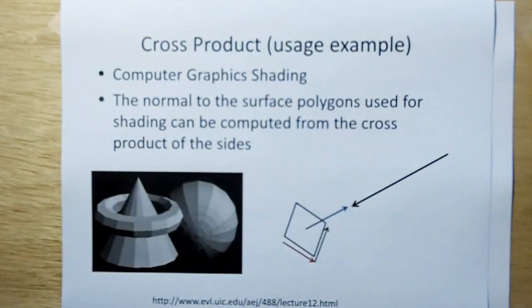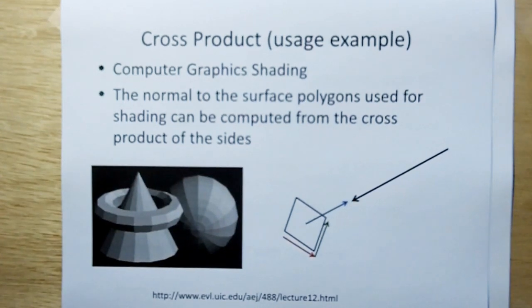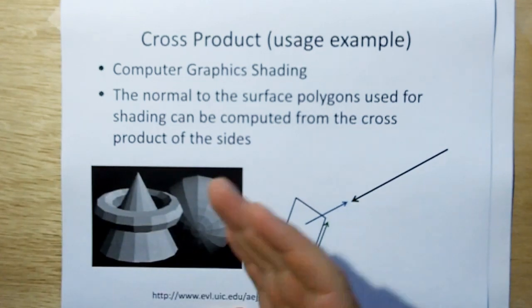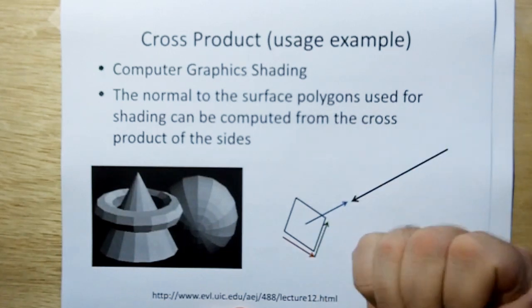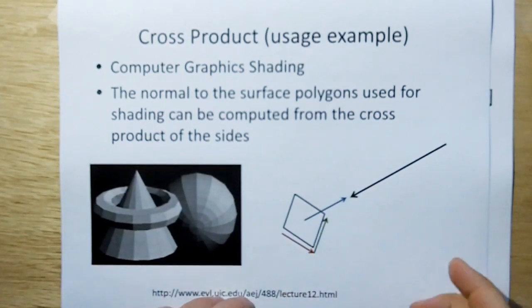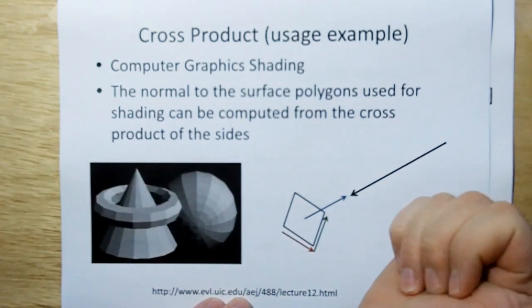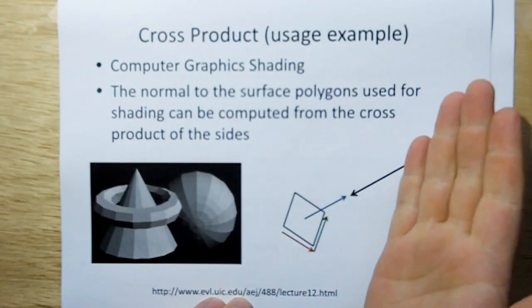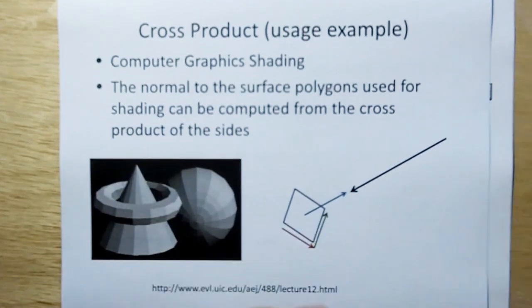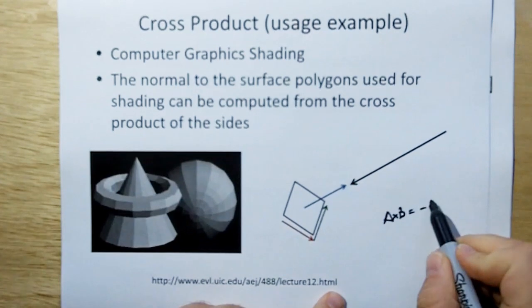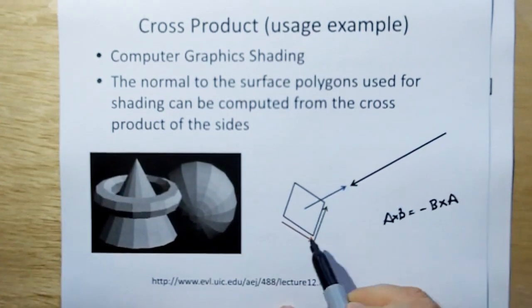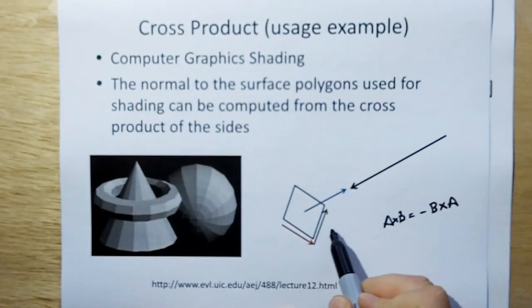So how do we use the cross product? Again, in computer graphics, if you want to know the normal to these little squares so you can compute your dot product to see how dark or light you're going to shade it, if you take one of the sides and cross it with the other side, you're going to get the normal to the vector. In this case, the red arrow cross the green arrow would give you that. If you do green cross red, you get the negative, just like I showed you before, where A cross B is one thing, but it's the opposite of B cross A.